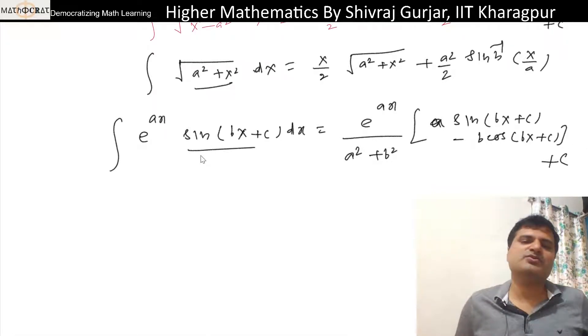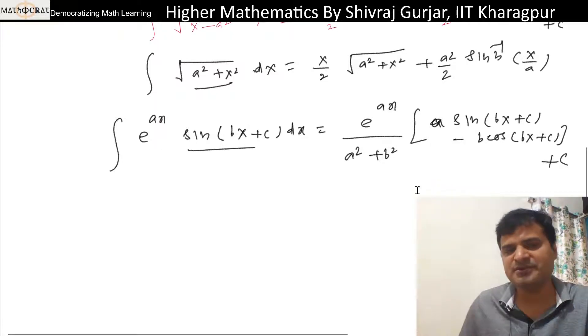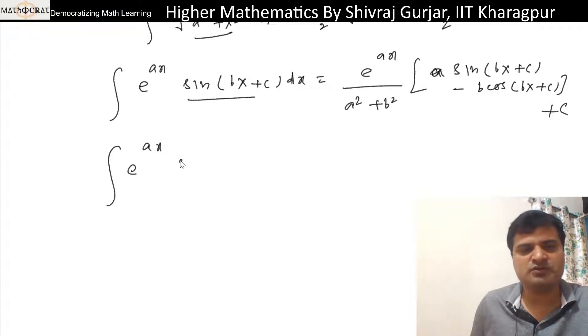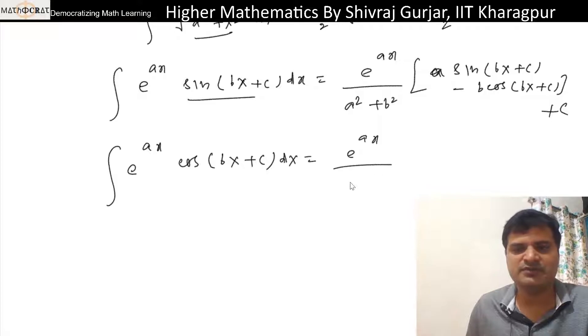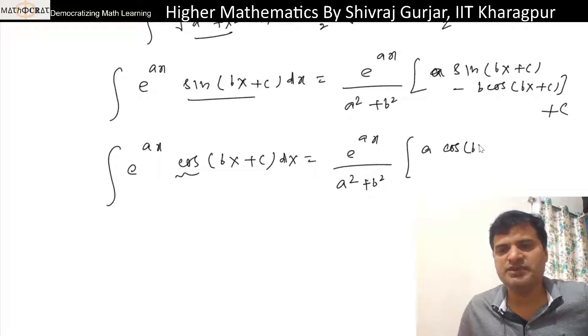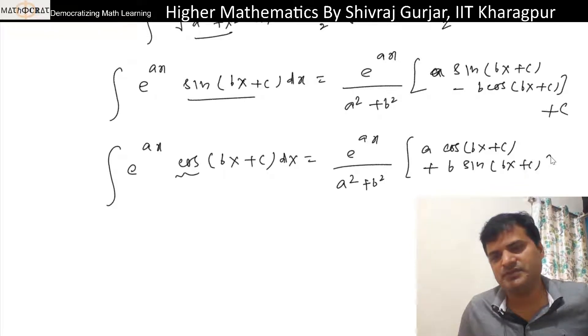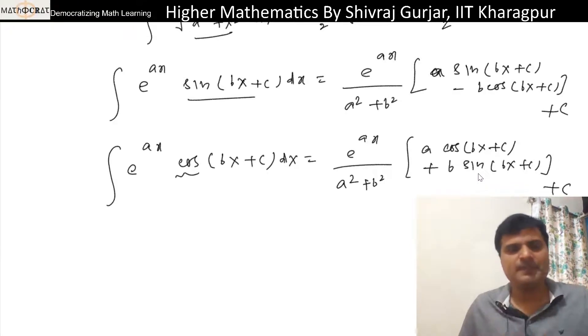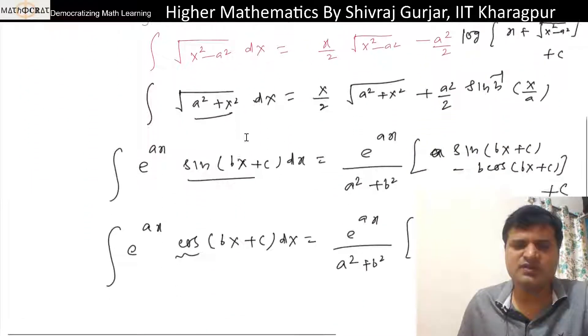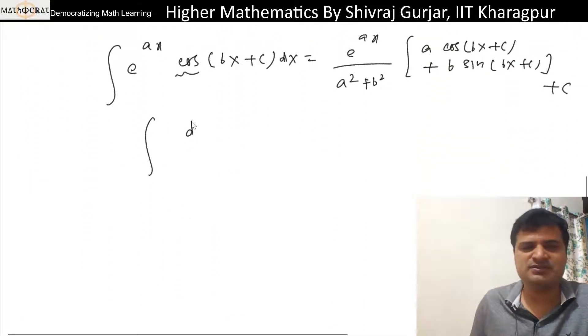From complex analysis we can do this. We can write e raised to power iota bx plus C, and the imaginary part of that will be this. So integral of e raised to ax times cos bx plus C dx is e raised to ax over a square plus b square times a cos bx plus C plus b sin bx plus C, plus constant of integration.